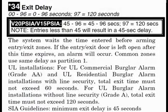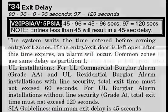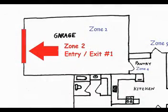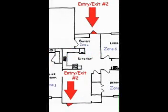Moving on, let's look at field 34 — exit delay. This field will determine the length of time that will elapse between when you press the arm button and when the alarm will actually be active. Pay particular attention to this: the system waits the time entered before arming the entry exit zones. What this means is the delay is for only two zone types — entry exit 1 or entry exit 2. All other zone types will arm immediately.